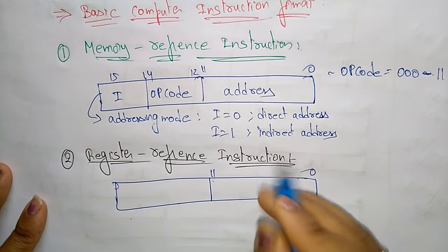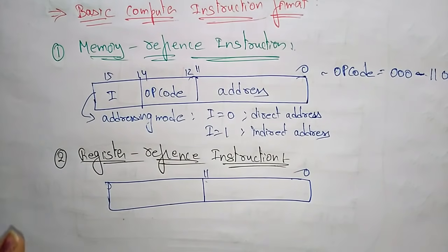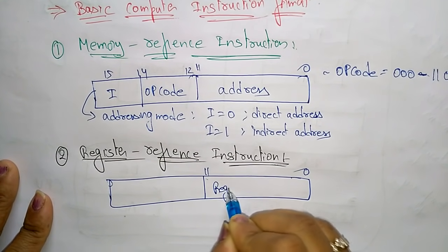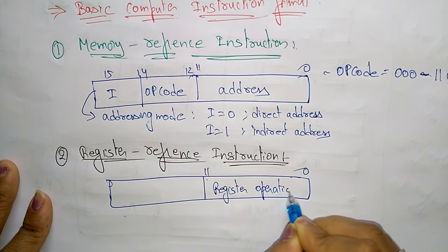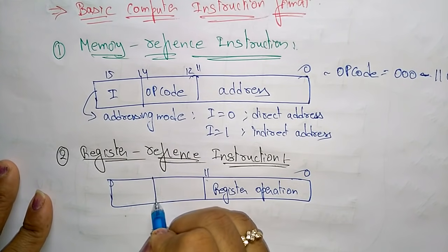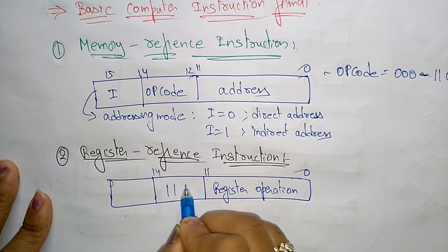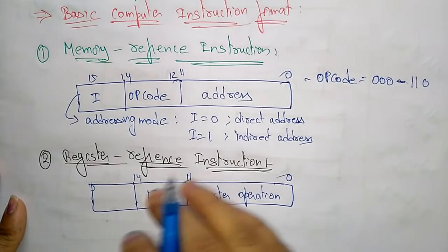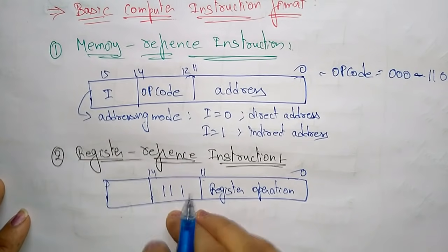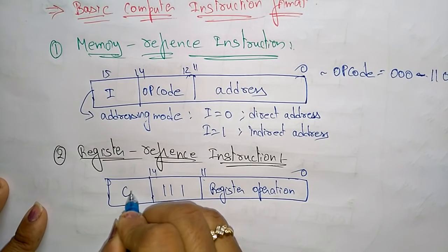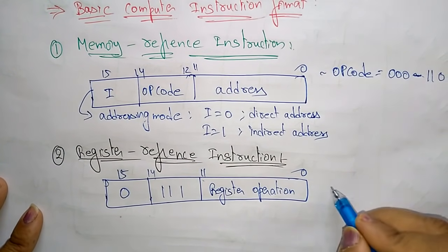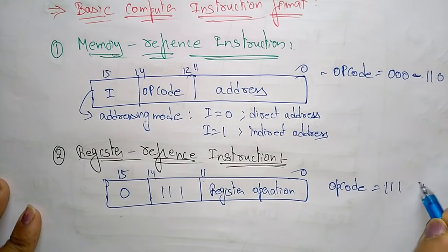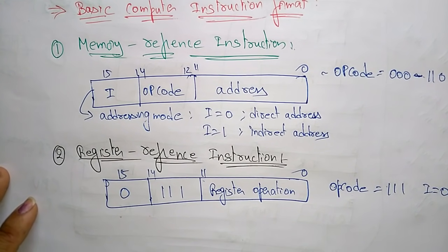In the memory reference instruction, bits 0 to 11 hold the memory address. In the register reference instruction, bits 0 to 11 hold the register operation — what operation the register has to perform. Bits 12 to 14 hold 111, which distinguishes it from memory reference instructions. For register reference, bit 15 (the I-bit) is always 0.